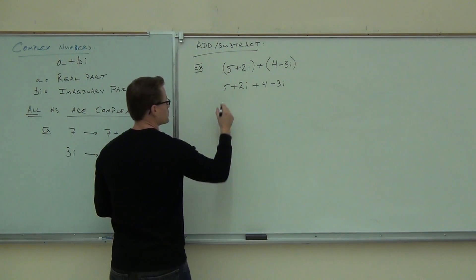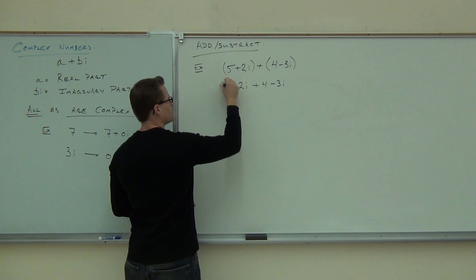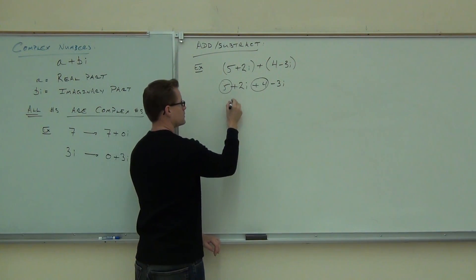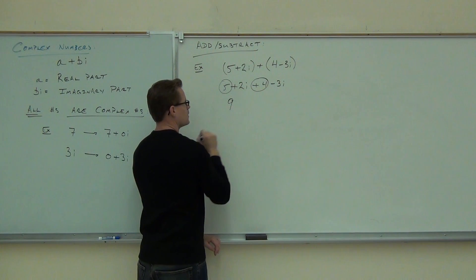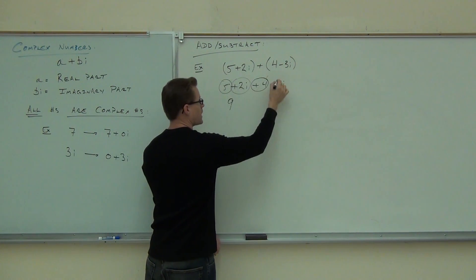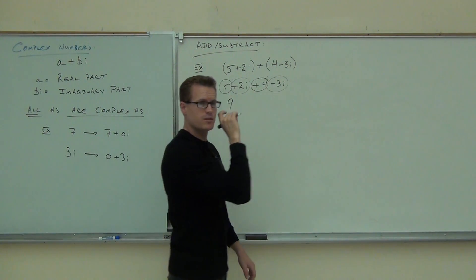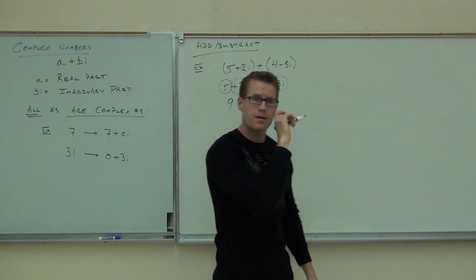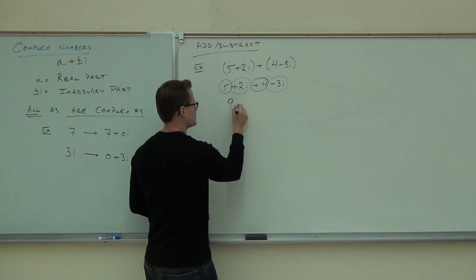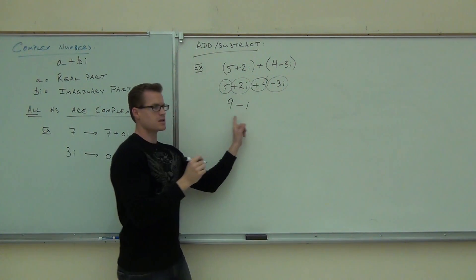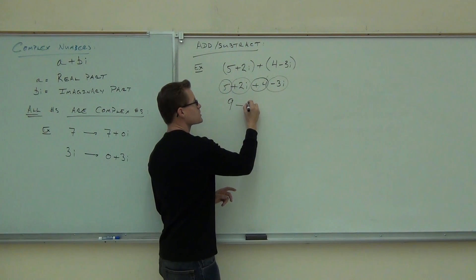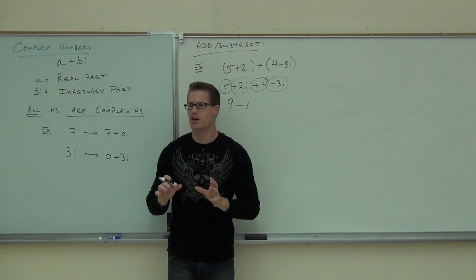Combine them like you would like terms. I know that 5 and 4 are like parts — that makes 9. I know that positive 2i and minus 3i are like parts. How much is positive 2i minus 3i? Minus i. Can you combine these things? No. This is very much like terms.